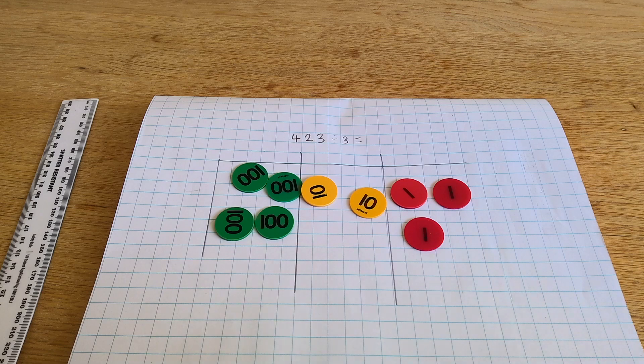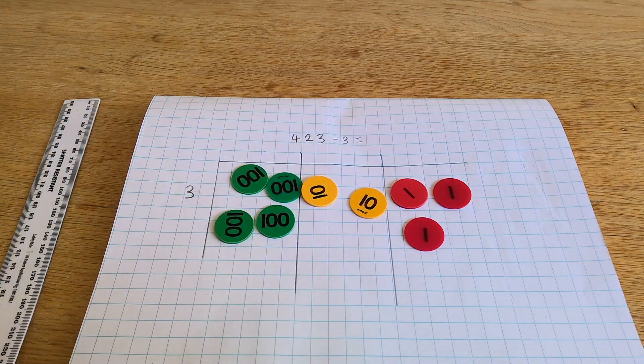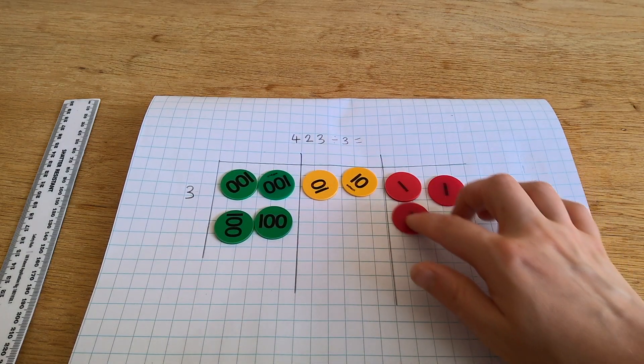I'm dividing it by a divisor of 3. I'm going to look at how many groups of 3 in each column.